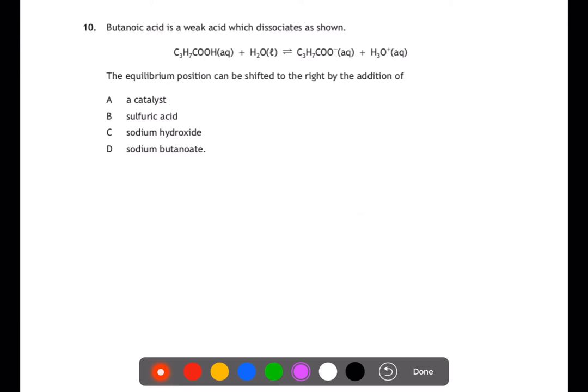Question 10. Butanoic acid is a weak acid which dissociates as shown below when it's in water, and we're looking at how we can shift the equilibrium to the right. There are different ways that we can shift the equilibrium: you could add in reactants, you could remove products or you could change the temperature. Adding a catalyst will not shift the equilibrium to the right, we'll just get to the equilibrium quicker. If we add sulfuric acid we're adding H plus, which is on the right hand side so this would shift the equilibrium to the left. If we add sodium hydroxide we're adding OH minus. That would react with the H plus ions and remove them from the equation. Therefore the equilibrium would have to shift to the right to rebalance that. So C would be our answer. If you were to add sodium butanoate you'd be putting in the butanoate ions, which you find on the right hand side and that would also shift the equilibrium to the left.